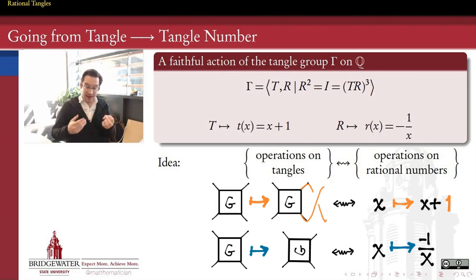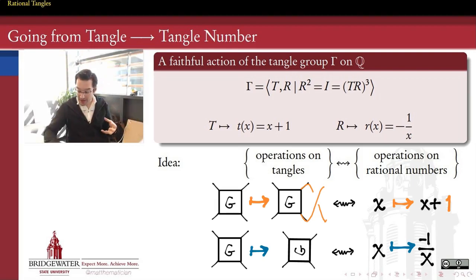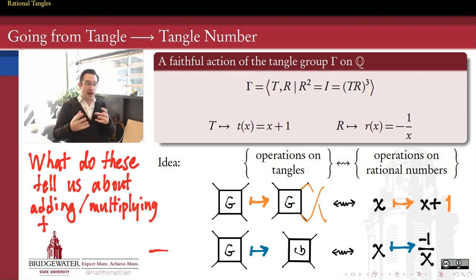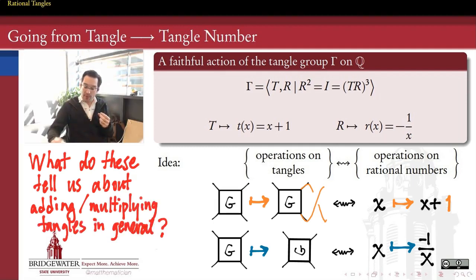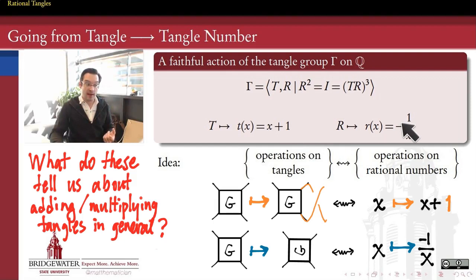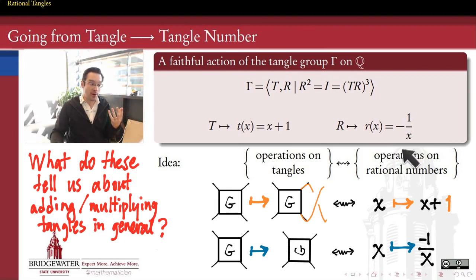This is great, except that thinking about rational tangles as being built out of all of these operations acting geometrically turns out to be fairly challenging. So the question for today is: what do these operations on tangles tell us about adding and multiplying tangles in general? Rational numbers are things we know how to add and multiply, satisfying a lot of nice properties. So how can we think about adding tangles to one another, or multiplying tangles by one another, or taking reciprocals of tangles?